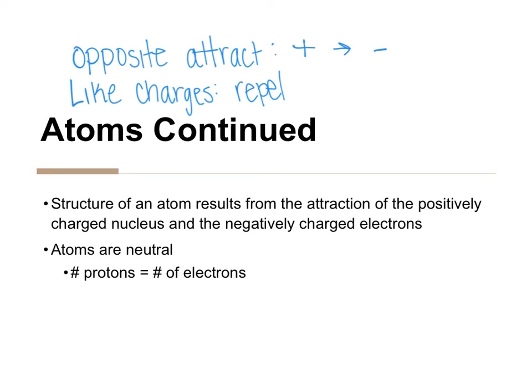Another characteristic of atoms is that they are neutral — electrically neutral. That means the number of protons, or positively charged subatomic particles, is going to equal the number of electrons, or the number of negative charges.